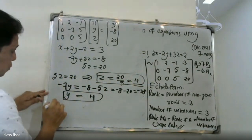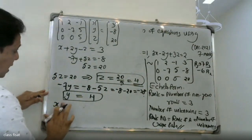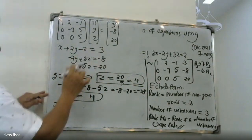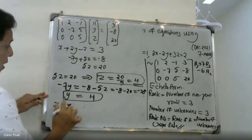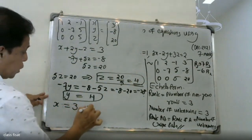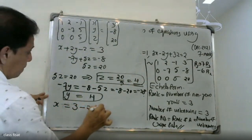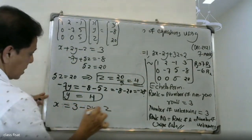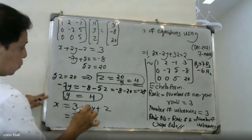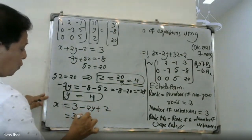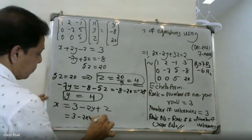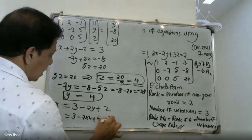From the first equation, x plus 2y minus z is equal to 3. Substituting y equals 4 and z equals 4: x plus 2 times 4 minus 4 equals 3. So x plus 8 minus 4 equals 3, giving x equals 3 minus 4, which is minus 1.